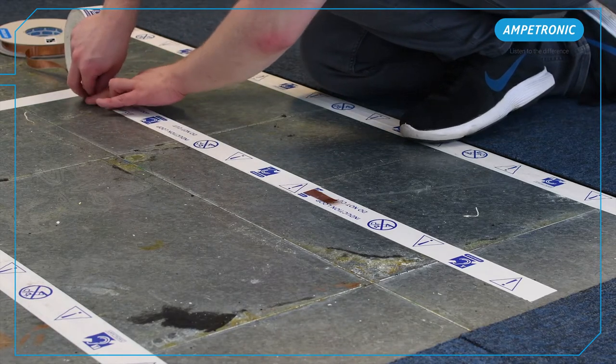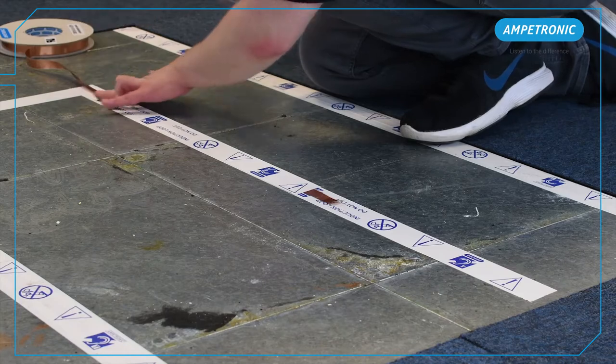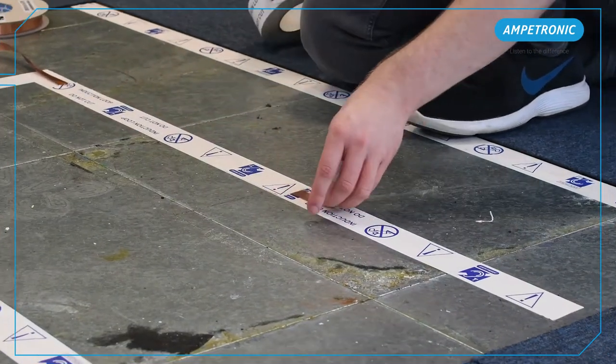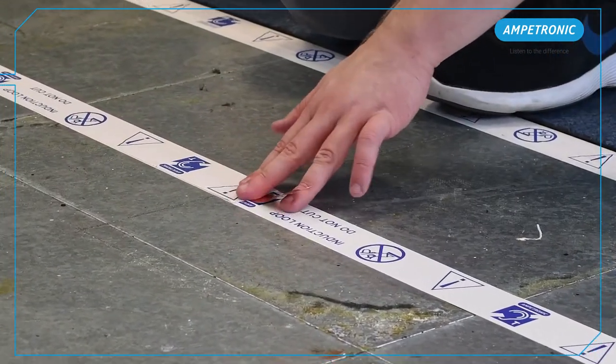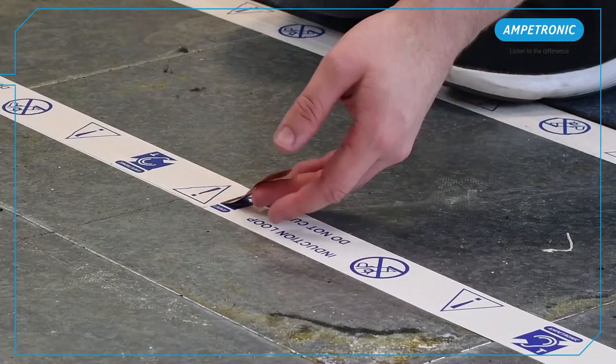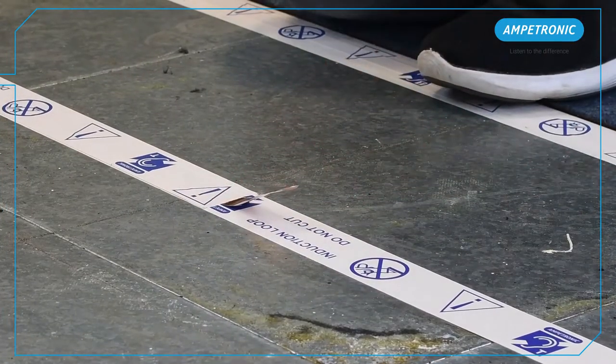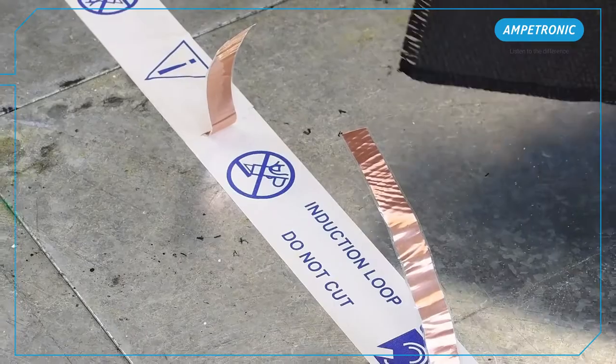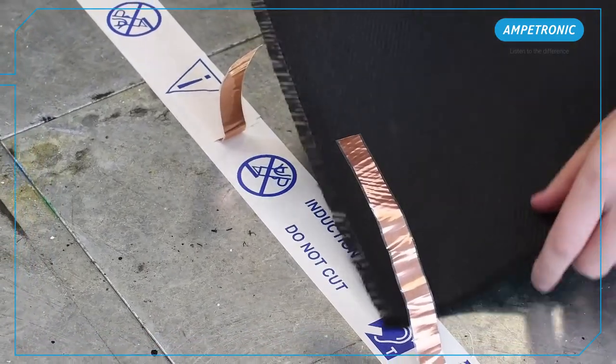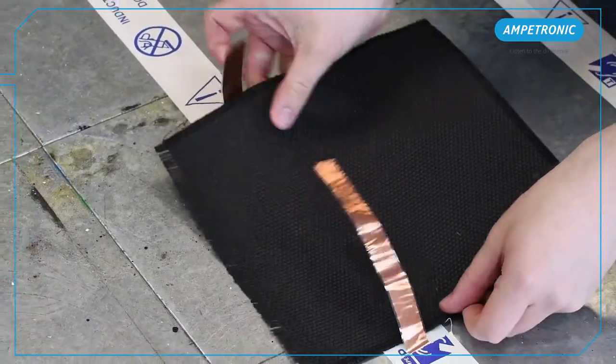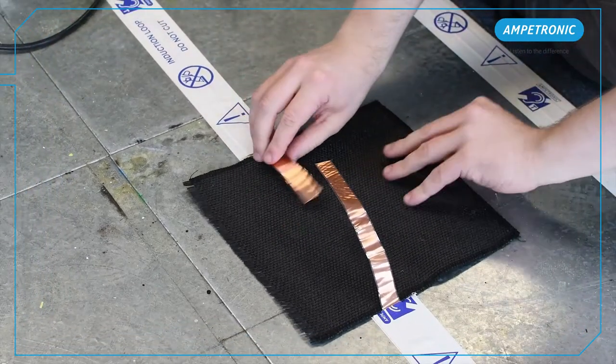It is best practice to clean the surface where you're installing the loop. If you're working on metal system flooring, lay a base layer of adhesive tape first to give extra protection from grounding. If you're installing on concrete, the surface should be sealed and a spray adhesive may be useful to help fix the tapes down.